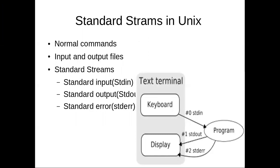Usually when we are executing a command, the input to the command will be received from our standard input device, that is your keyboard. After executing the command, the output will be displayed on the screen, that is your standard output device. The input and output files are usually a stream of characters. Standard stream means it is the pre-connected channel between the program and your standard input/output devices. In the Unix system there are three input/output stream files.